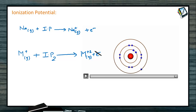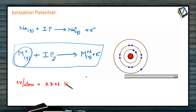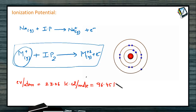The amount of energy required to remove an electron from the unipositive ion is called the second ionization potential. The units of ionization potential are represented as electron volts per atom, or in kilocalories — that is, 23.06 kilocalories per mole — or in joules, as 96.5 kilojoules per mole. The energy can be represented in various forms: electron volts, kilocalories, or kilojoules.